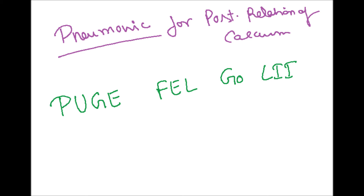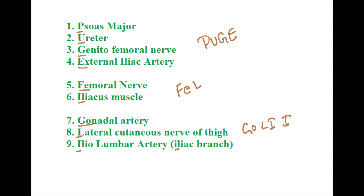Now I'm going to tell you the posterior relations of the cecum with the help of a mnemonic. The mnemonic is 'PUJA FEL GOVI' — you can easily remember the posterior relations using this.